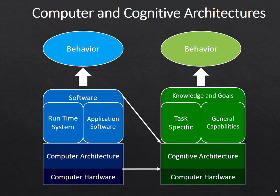We are developing on top of computer hardware, but the idea is we have a cognitive architecture that provides the fixed mechanisms. And what's on top of that, instead of computer programs such as in Java or Python, is the knowledge and goals of the agent that it learns over time. Some of that's going to be task-specific, some general capabilities such as language processing or problem-solving strategies. Together, that knowledge and goals is what produces behavior.